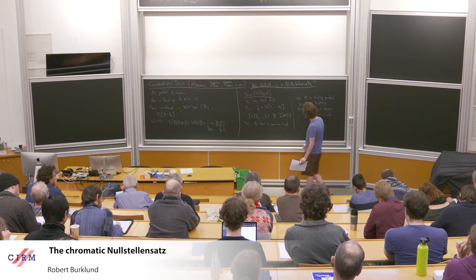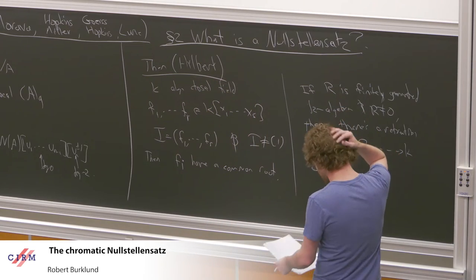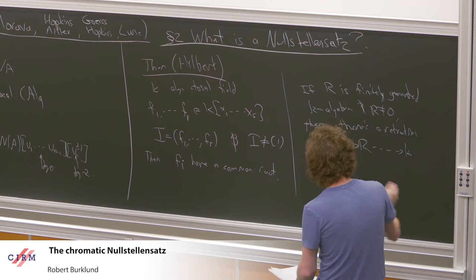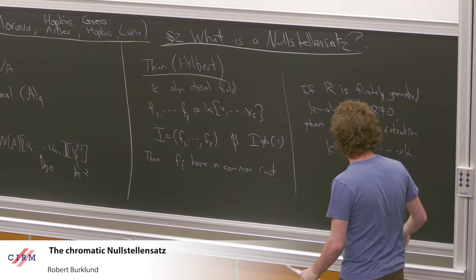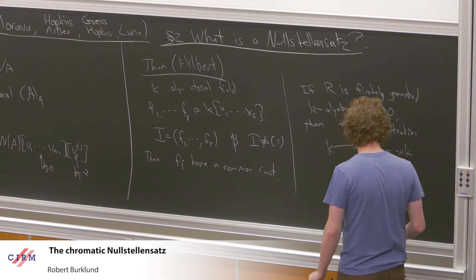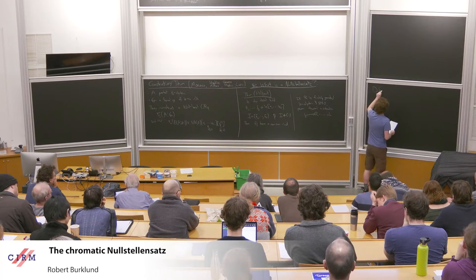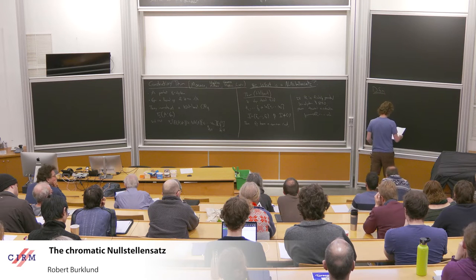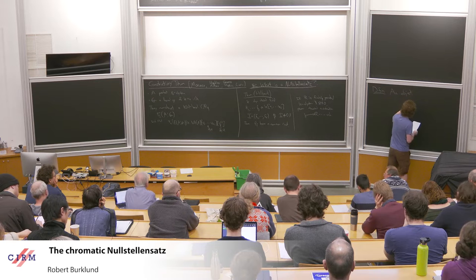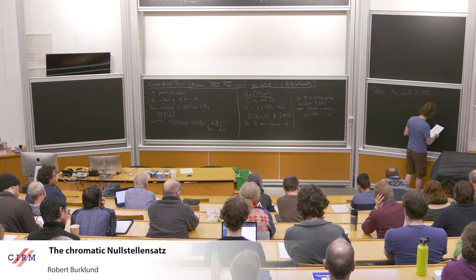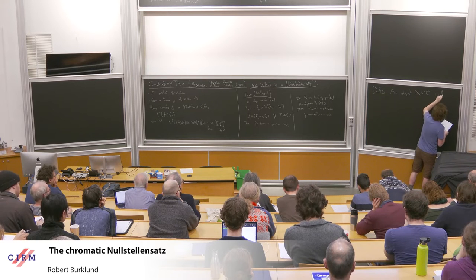That's just a restatement, but we're getting much closer to something you can state in a lot of different places. We've moved from something specific to polynomials and ideals to something about just a finitely generated object. And one simple replacement you learn to do: when you see 'finitely generated,' you can often just replace that with the word 'compact,' and then you can say things in whatever category you want.